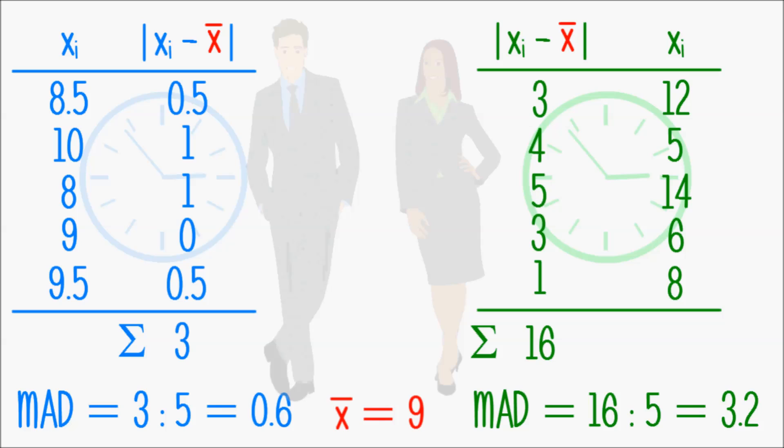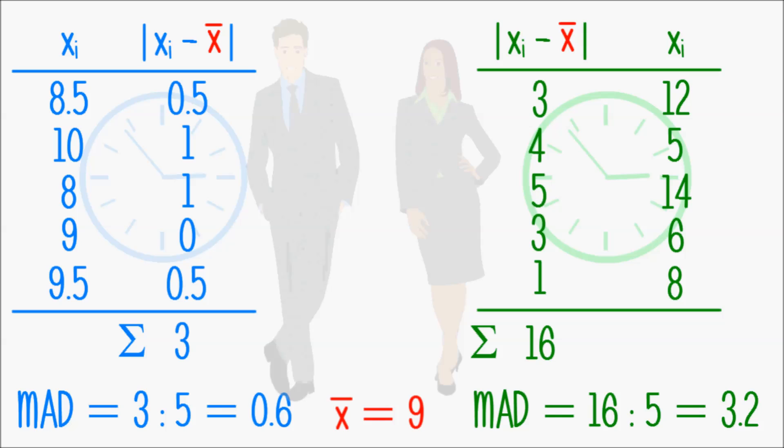instead of using the absolute value, one could just use the square of each difference. Because squaring values gives us positives as well.